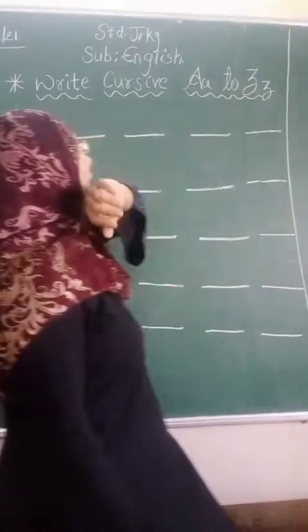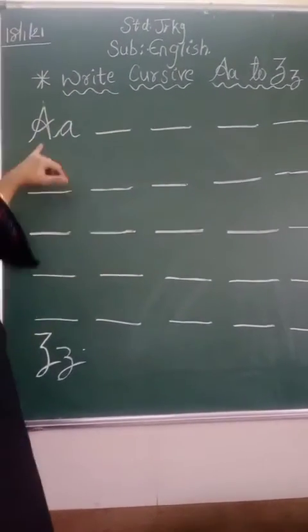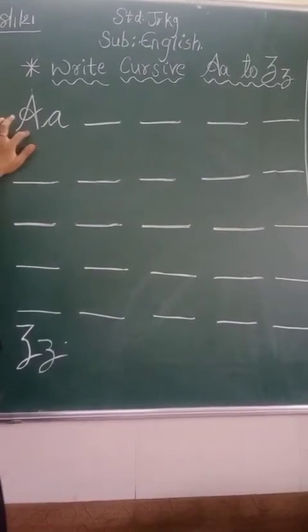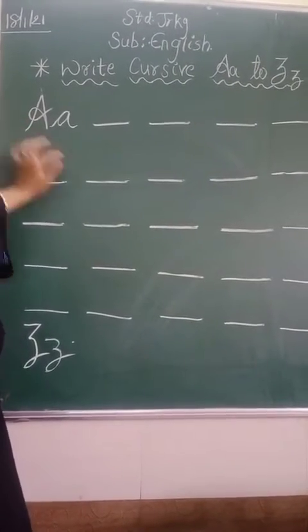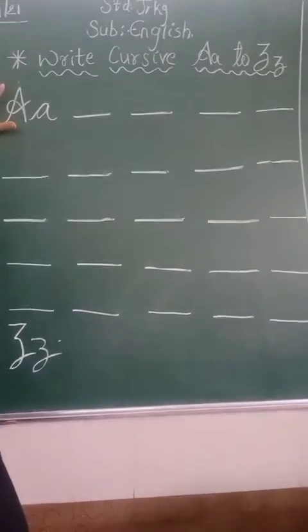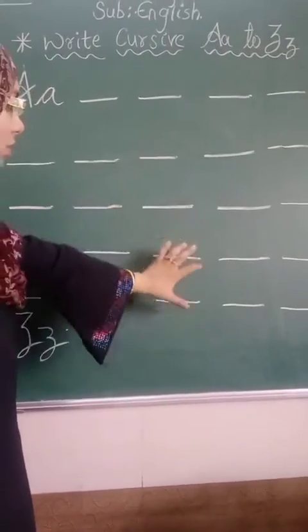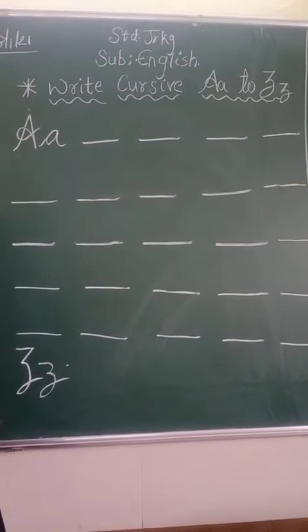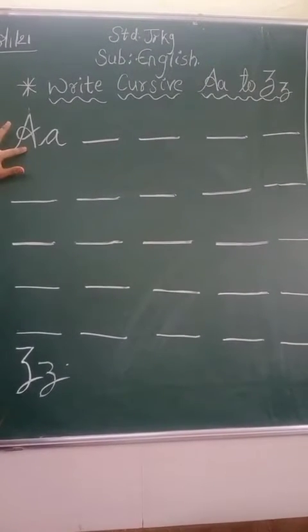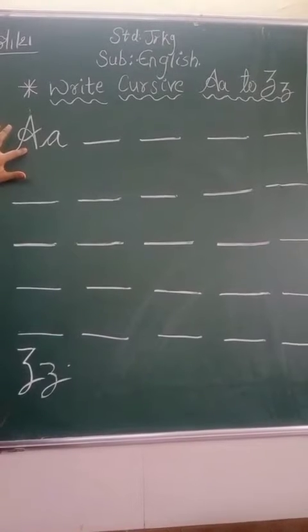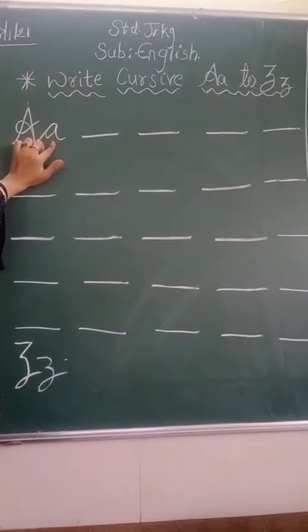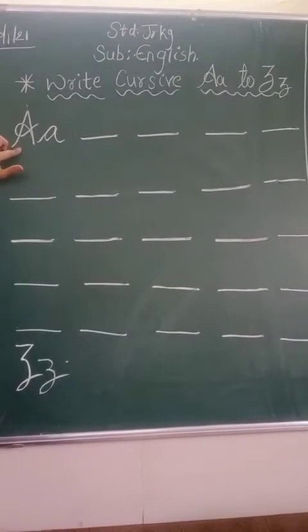A to Z, capital cursive and small. Okay? In paper, this will come. You have to fill this all. In the paper, blanks will be there, you have to fill them. I taught you previously capital cursive up to Z and small cursive up to Z. Now we will write both.